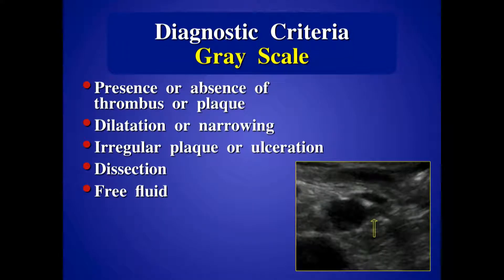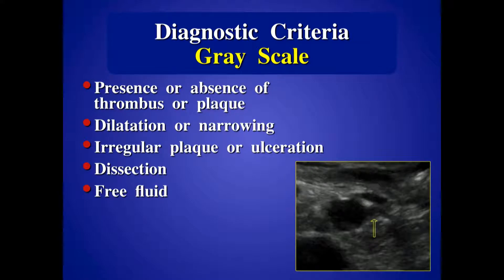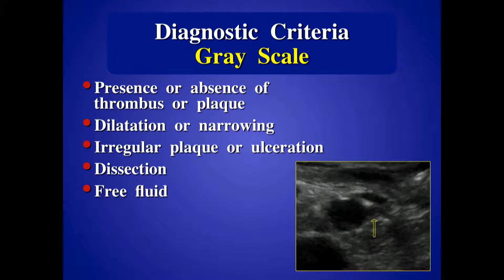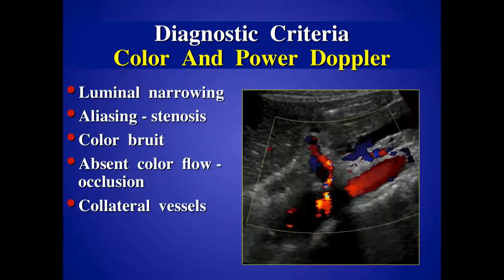Looking at the renal artery and seeing plaque — even a relatively hypoechoic plaque with good resolution, seeing the narrowing — even before you put the color on, allows you to determine there's going to be something there. Also look for evidence of dissection, look for a flap, look for fluid around the aorta, look for an aneurysm — all important parts of the exam.